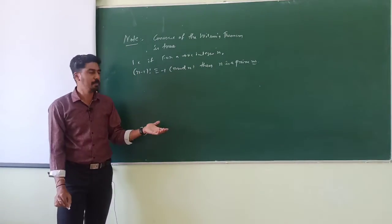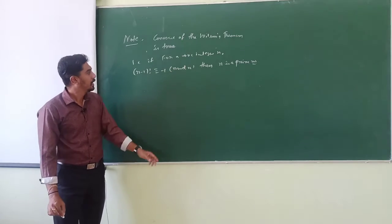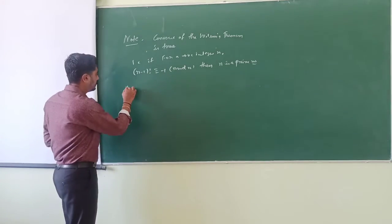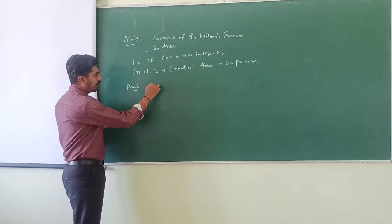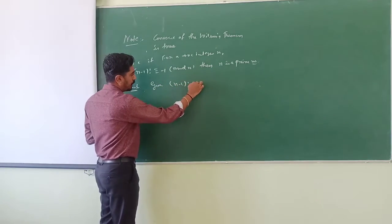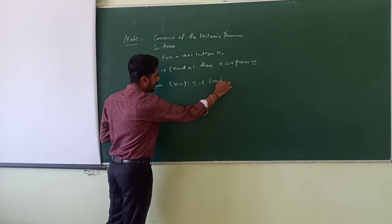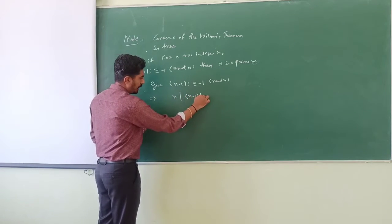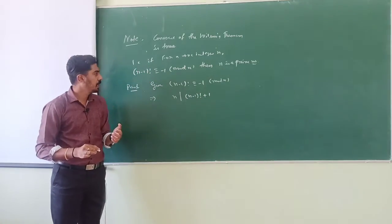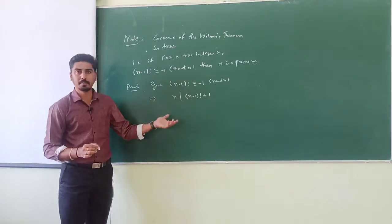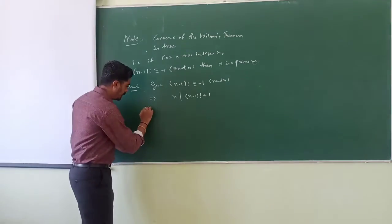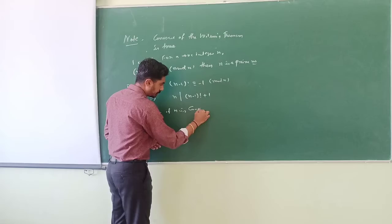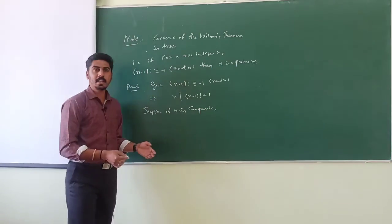We know that if p is a prime number, (p minus 1)! ≡ minus 1 (mod p). Conversely, if (n minus 1)! ≡ minus 1 (mod n), then n should be a prime number. Proof: Given that n divides (n minus 1)! plus 1. To prove n is prime, we use contradiction. Suppose n is composite, then n has a non-trivial factorization.